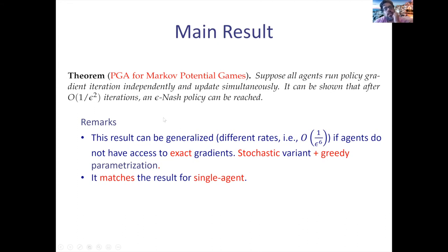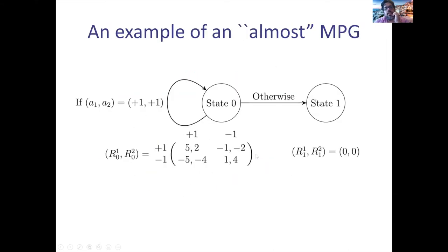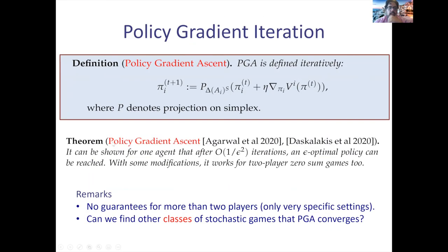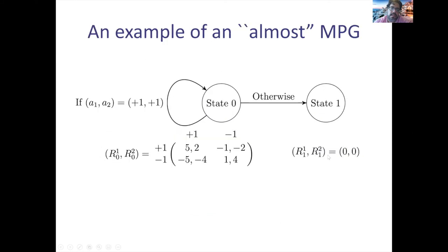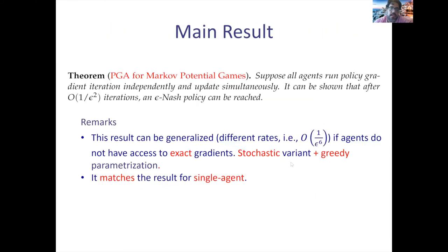If you have exact gradients and use 1/ε² iterations, this matches the result for single-agent settings. I told you that for one agent, you need 1/ε² to reach an ε-optimal policy — we match this bound for multiple agents in Markov potential games. For the remaining time, I'll talk about the proof steps behind this result.